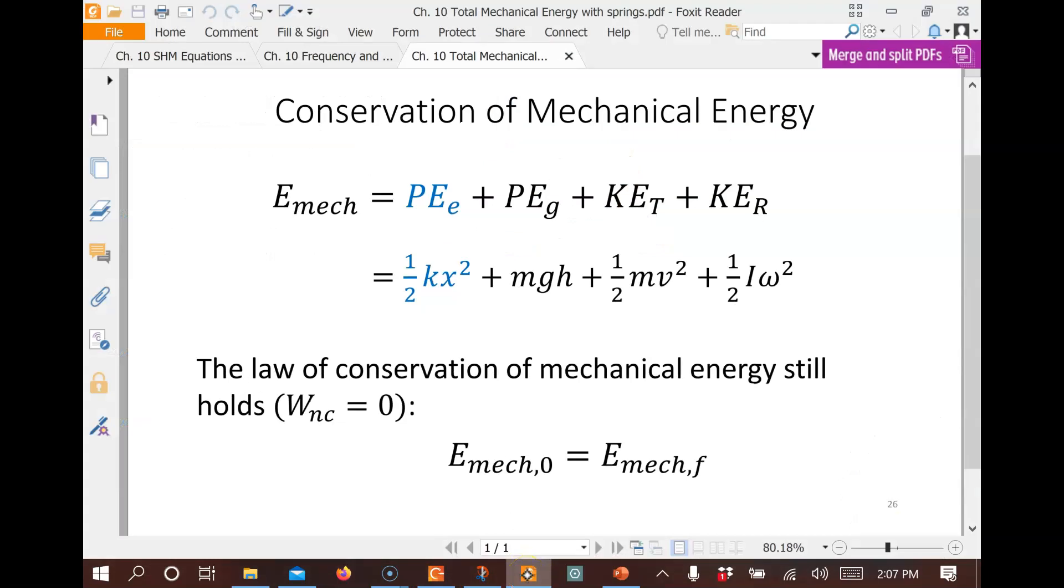So let's see what do we need to keep in our term for mechanical energy. We're going to have elastic and gravitational potential energy, so we need both these terms. We're going to have translational kinetic energy. We do not have rotational kinetic energy. So we'll have three terms.